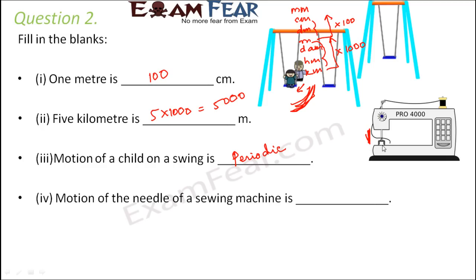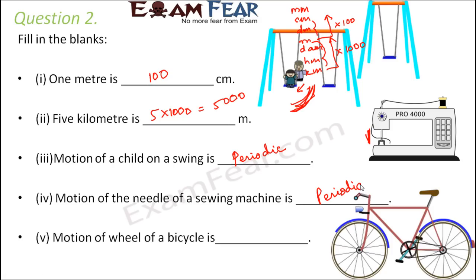Motion of the needle of a sewing machine: it moves up and down, up and down repeatedly — that is how the needle moves. This is again periodic motion because the up-and-down movement is repeated over periodic intervals of time. Motion of the wheel of a bicycle: the wheel moves in a circular path, so this is circular motion.